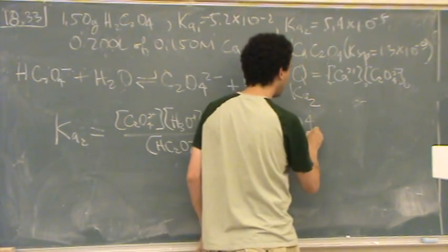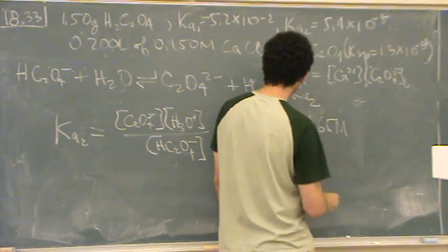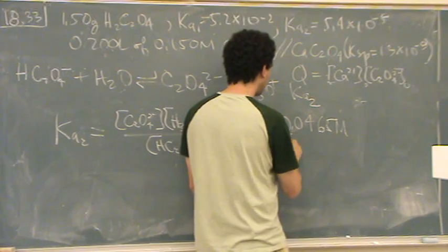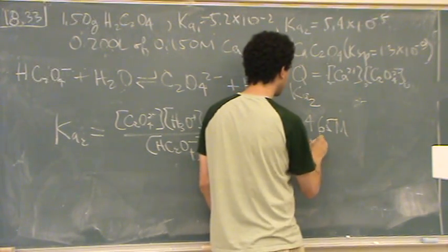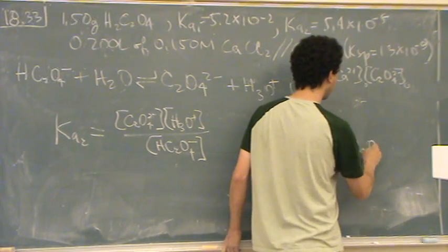And what did I say X was from before? 0.045? 465. 465, 465. Okay. So if that's X from before, that was a concentration of H3O plus and the concentration of HC2O4 minus.